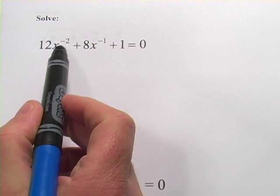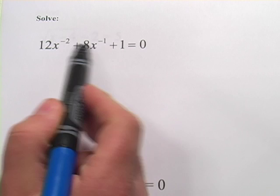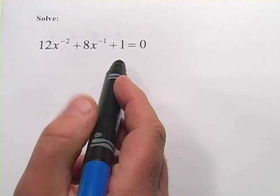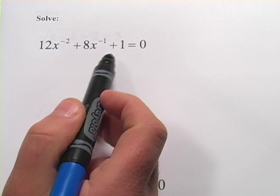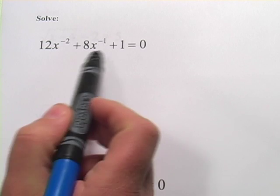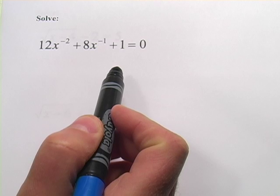So in this first one, we've got 12x to the negative 2 plus 8x to the negative 1 plus 1 equals 0. If those were positive exponents, that would be a normal quadratic form. Well, we can solve this with a very similar approach to the way we would solve a quadratic equation. So my first piece of advice would just be to imagine this is a regular quadratic equation and see if we can factor it.